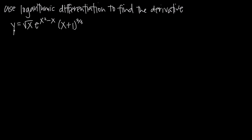In this problem, we need to find the derivative y prime, and we have the function y equal to the square root of x times e to the x squared minus x, times quantity x plus 1 to the 2 thirds power. If we were going to take the derivative of this normally, we would need to use product rule — we have three functions: square root of x, the exponential function, and x plus 1 to the 2 thirds. So it would be a lot of work using product rule and chain rule, but we can also use logarithmic differentiation to find the derivative.